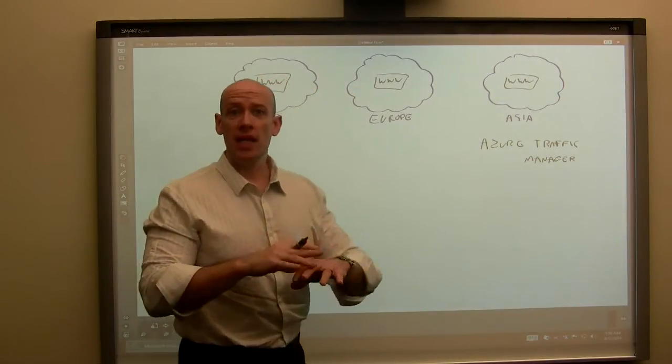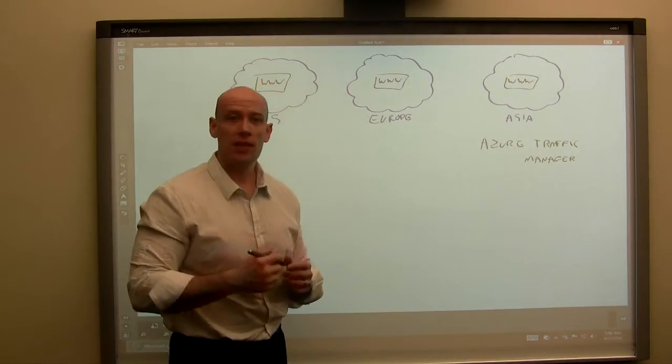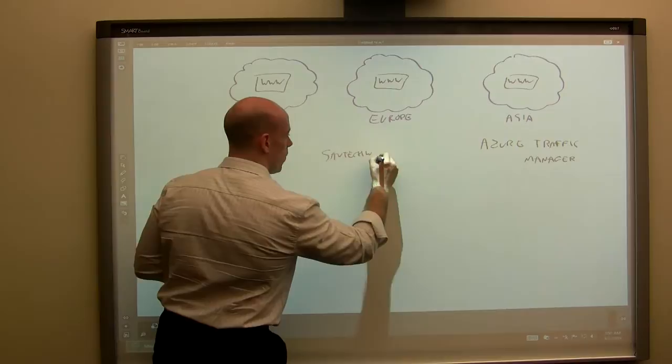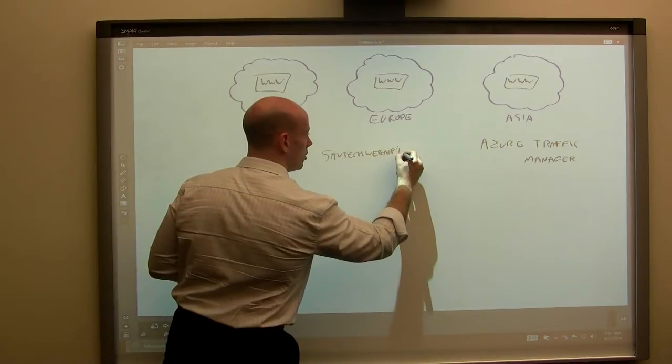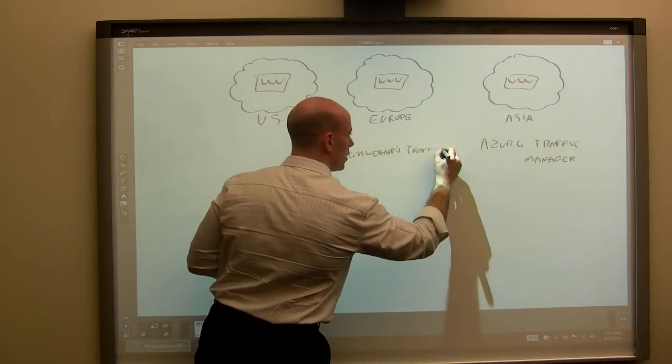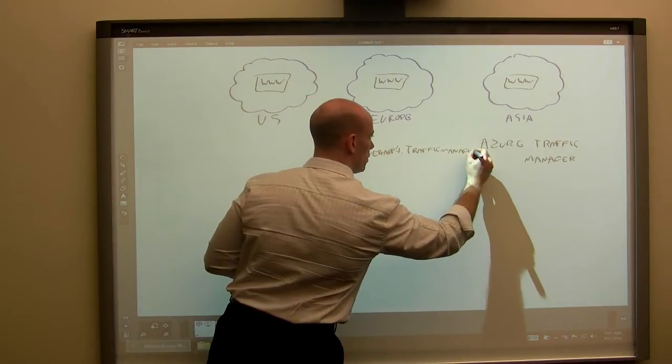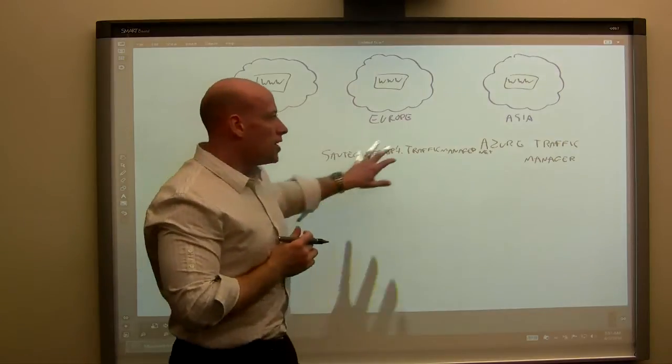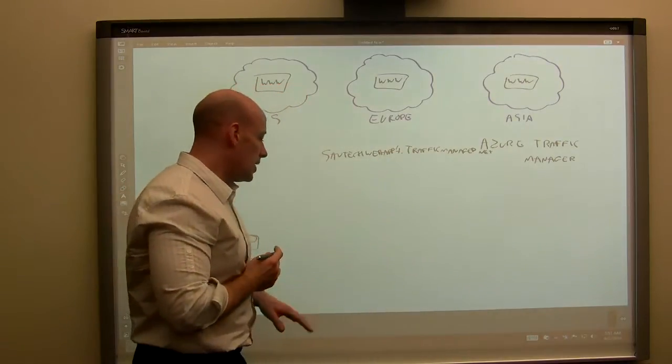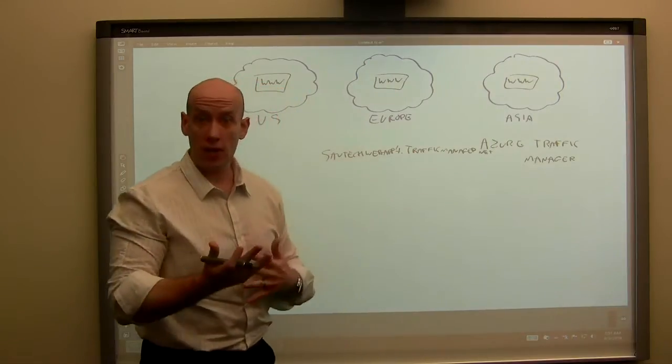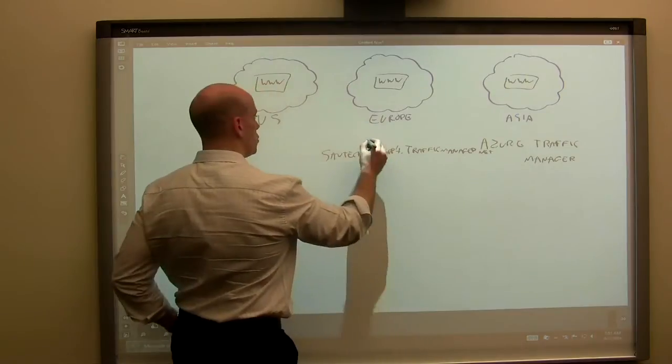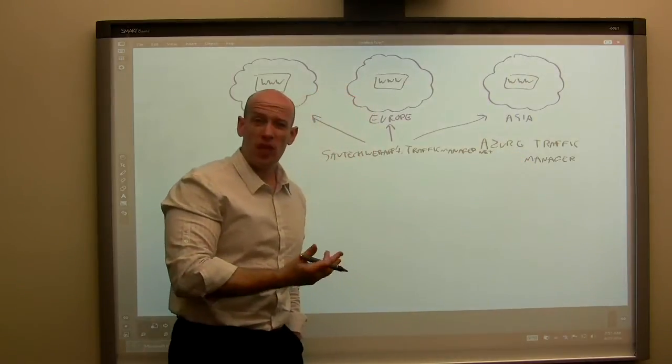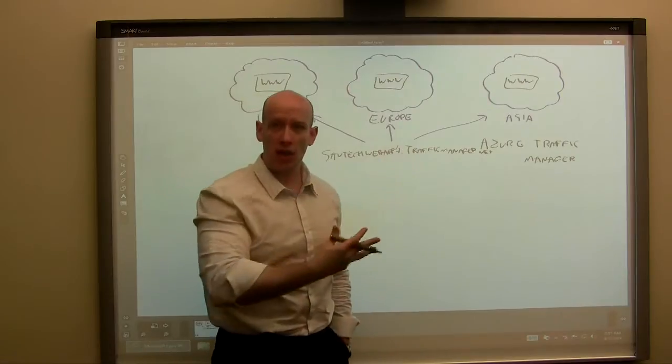And what it lets me do is create profiles. So I create a name, and this name is globally unique in the Azure Traffic Manager namespace. So maybe this is, for example, savtechwebapp1.trafficmanager.net. It's always the trafficmanager.net namespace. And what this profile allows me to do in Azure Traffic Manager is it actually has endpoints defined. So this redirects to, for example, the US version, the Europe version, and the Asia version.